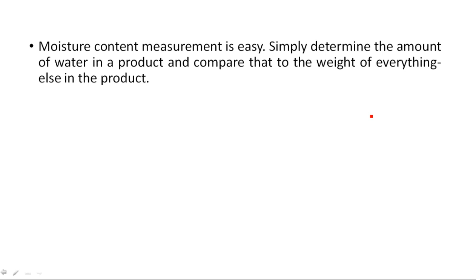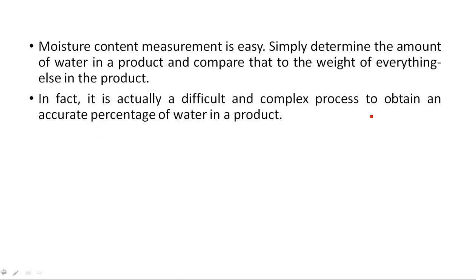Moisture content measurement is easy — simply determine the amount of water in the product and compare that to the weight of everything else. Moisture is used to find the amount of water content present in a particular product, environment, or atmosphere, removing everything else and keeping the weight of water only. In fact, it is actually a difficult and complex process to obtain an accurate percentage of water in a product.